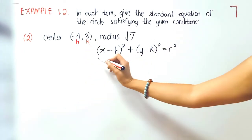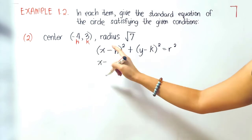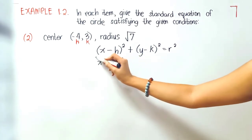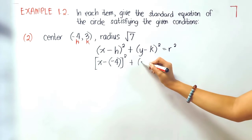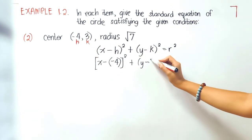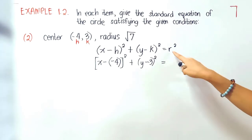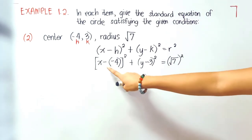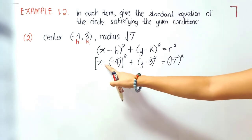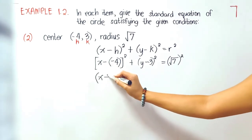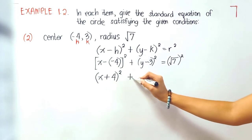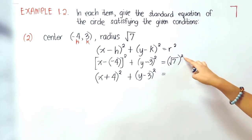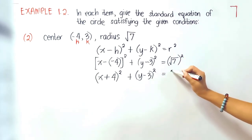We are now ready to substitute: x minus h, where h is negative 4, quantity squared, plus y minus k, where k is 3, quantity squared. Remember that negative times negative is positive, so that will be x plus 4, quantity squared, plus y minus 3, quantity squared, is equal to 7 squared. The square root will be canceled, so what's left is 7 squared, which equals 49.